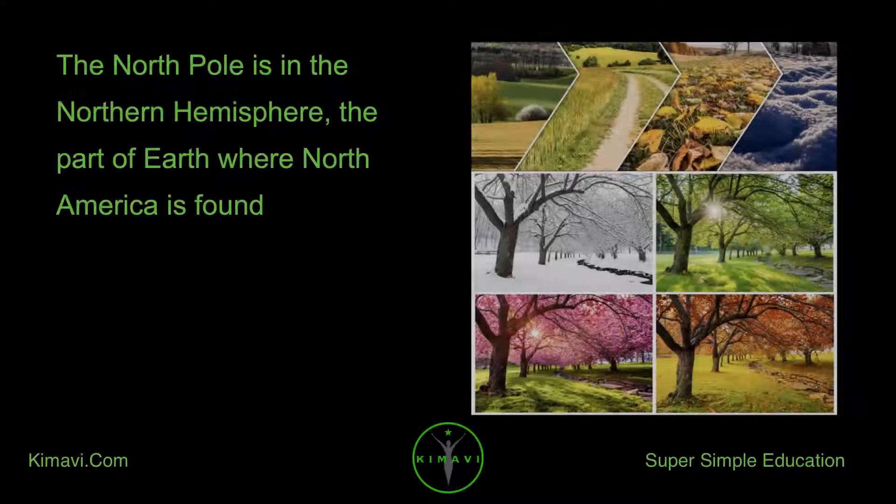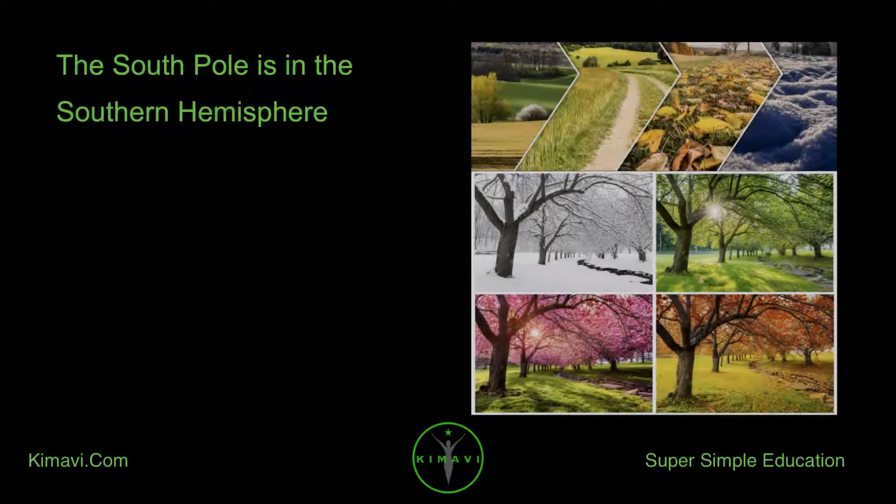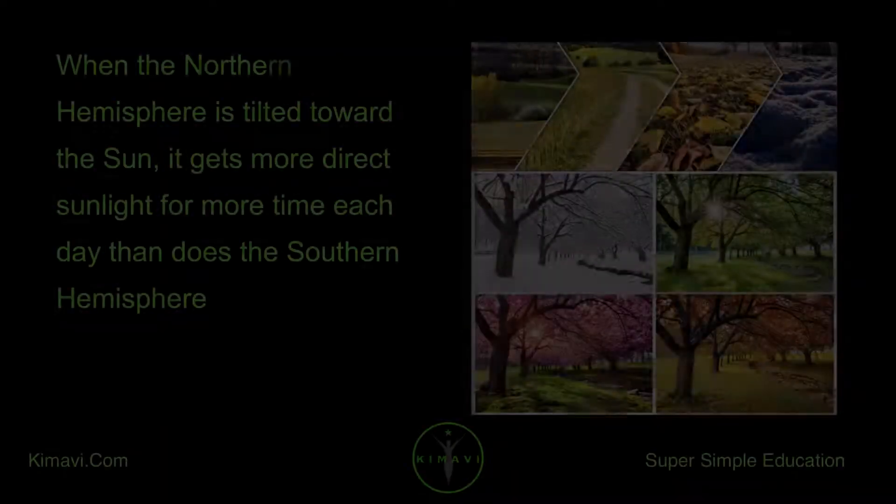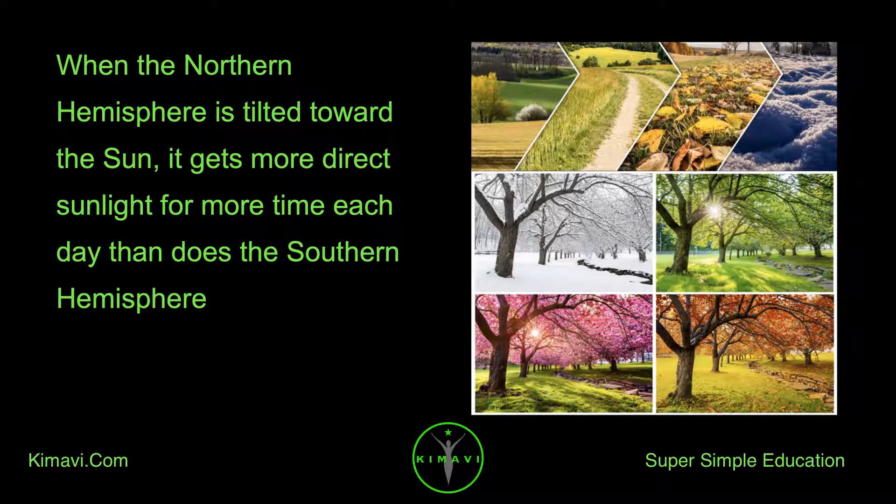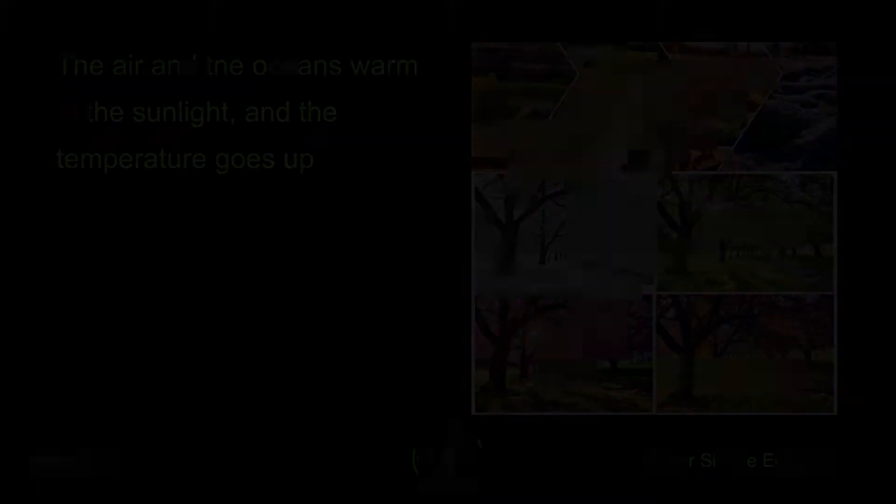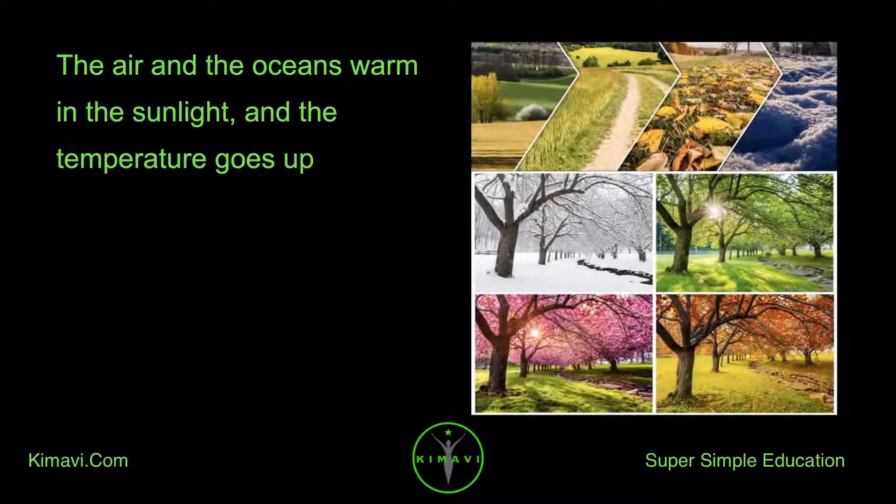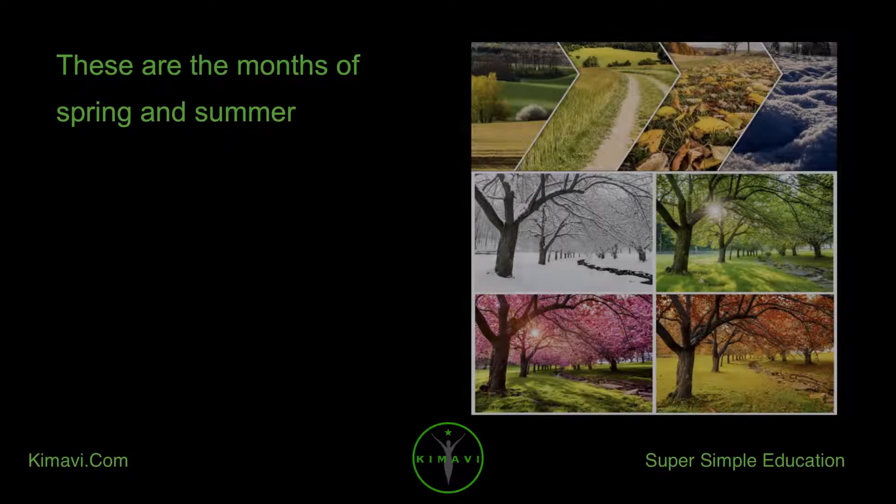The North Pole is in the Northern Hemisphere, the part of Earth where North America is found. The South Pole is in the Southern Hemisphere. When the Northern Hemisphere is tilted toward the Sun, it gets more direct sunlight for more time each day than does the Southern Hemisphere. This makes the days longer in the North. The air and the oceans warm in the sunlight, and the temperature goes up. These are the months of spring and summer.